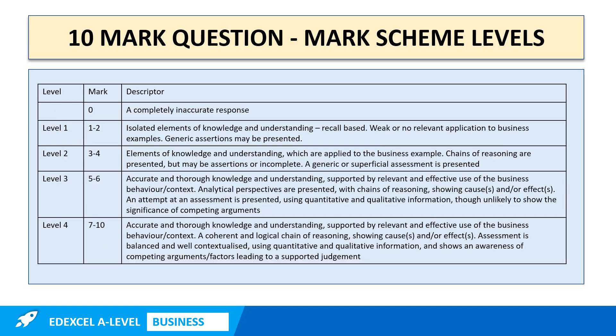On screen are the different descriptor levels for a 10 mark question. There are four levels: Level 1 — 1 to 2 marks; Level 2 — 3 to 4 marks; Level 3 — 5 to 6 marks; Level 4 — 7 to 10 marks. And as we've just seen, you need a supported judgment if you are to get 9 and 10 marks.